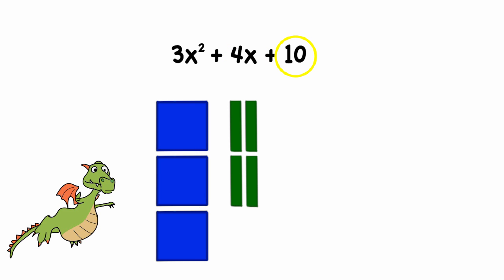After that, we have 10 units. From here, the pattern is pretty clear. To interpret 10 as an area, we just want 10 little 1 by 1 squares that each have the area of 1.